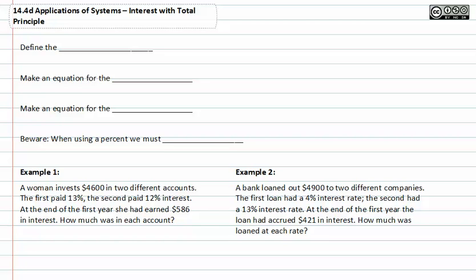When you have interest with total principal, define the variables first. Next, make an equation for the investment. Then make an equation for the interest, and remember that when using a percent you must convert to decimal.